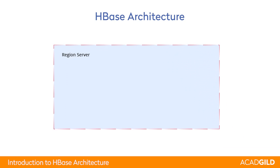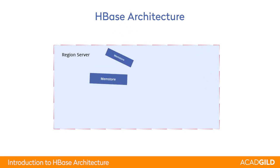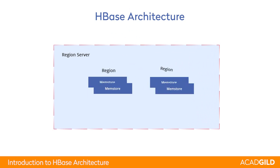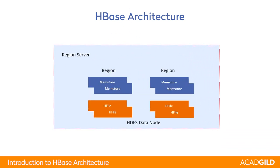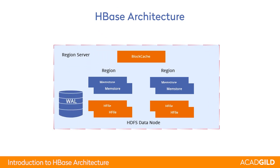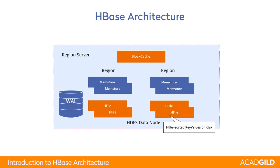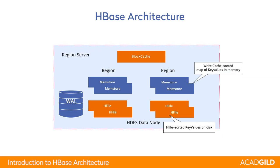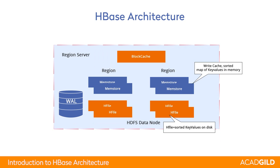There are four important components of a region server: the memstore, HFile, block cache, and write-ahead log. HFile stores the actual data in the HDFS. Any change like an update, delete, or insert that happens will go to the memstore, which is located in the RAM. This is because the content of the HDFS file cannot be directly updated.